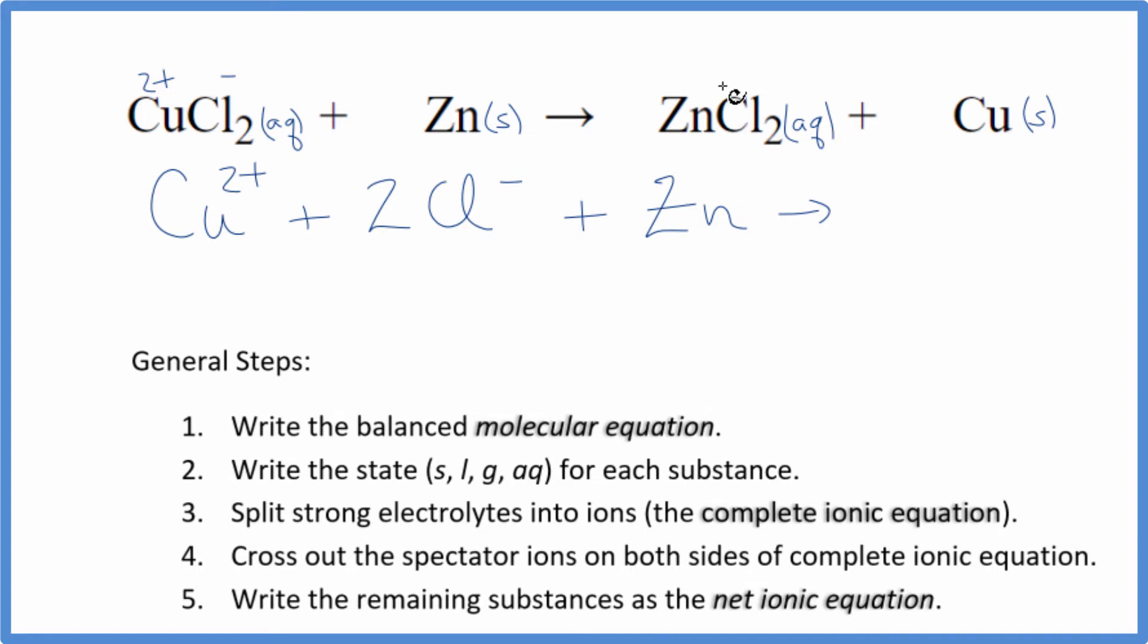In the products, zinc is always two plus. That's its ionic charge. We said the chlorine, one minus. So we'll have Zn two plus, the zinc ion, plus two of the chloride ions, just like in the reactants. And then the copper, that's just Cu. So we have our products.